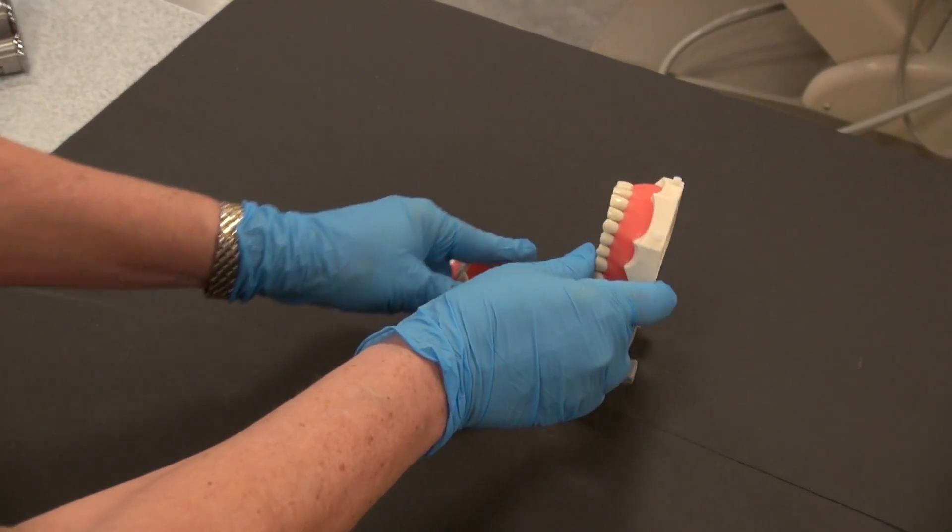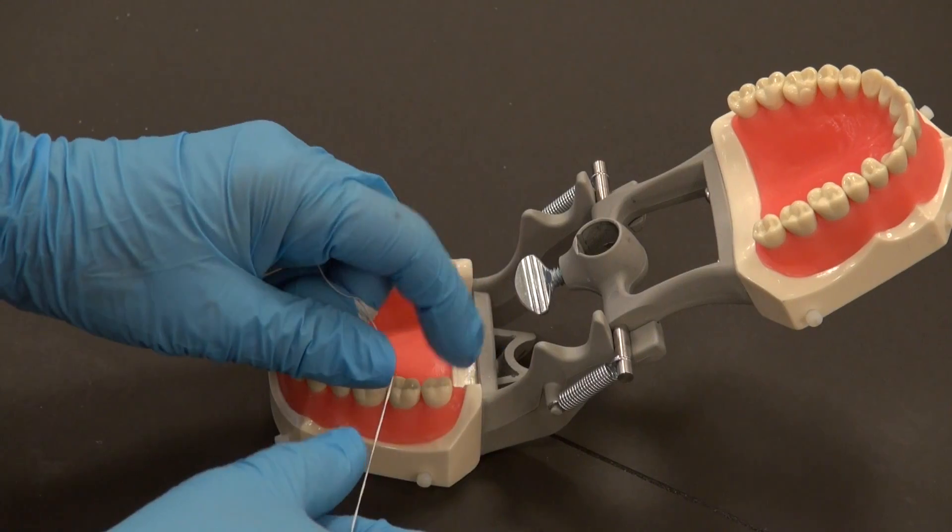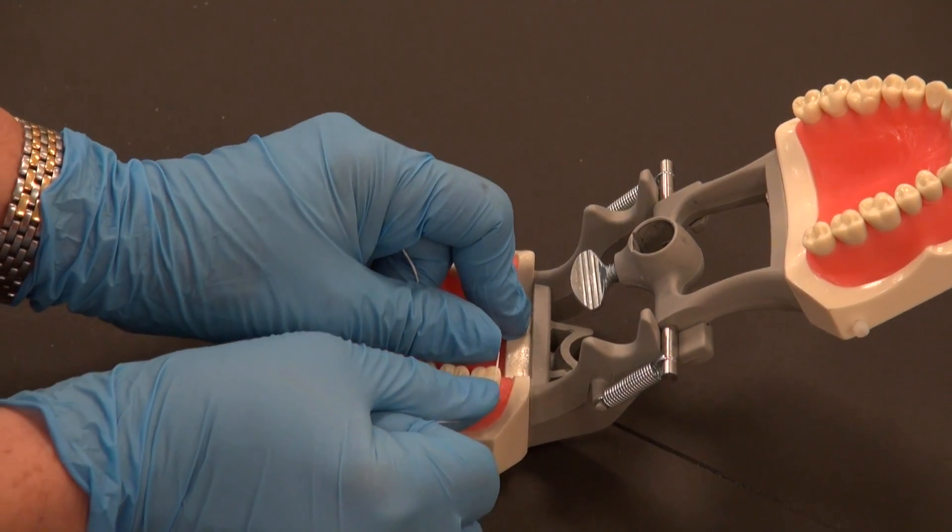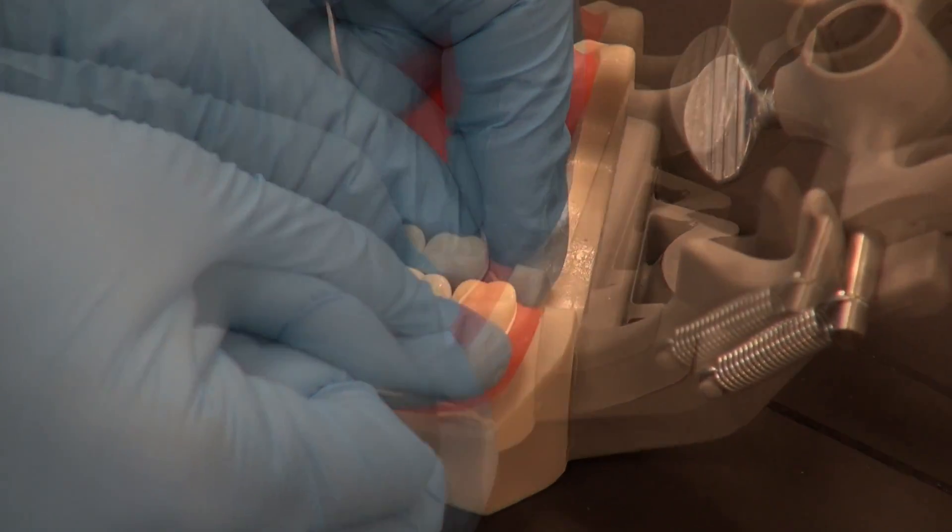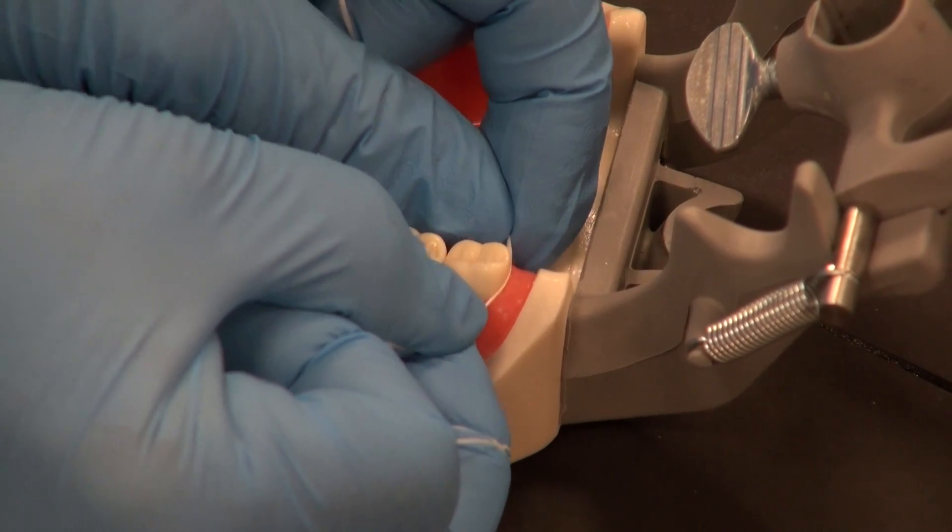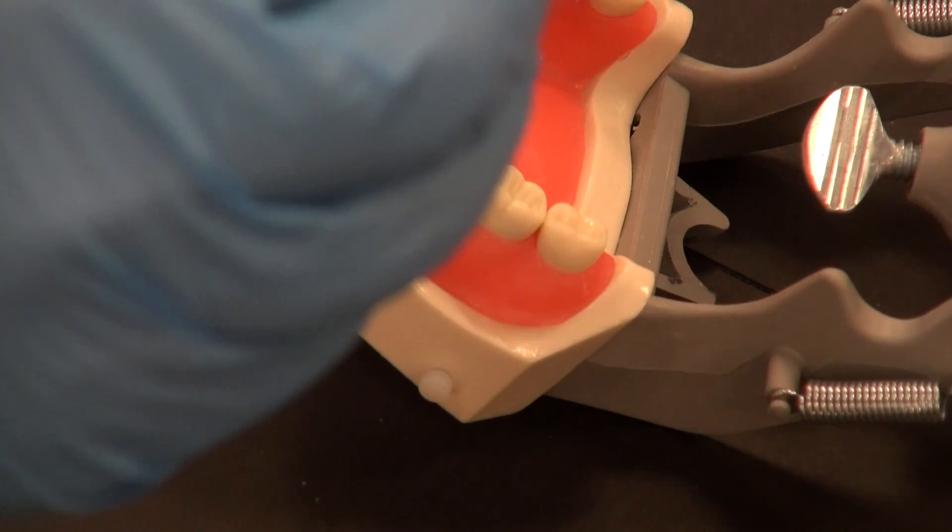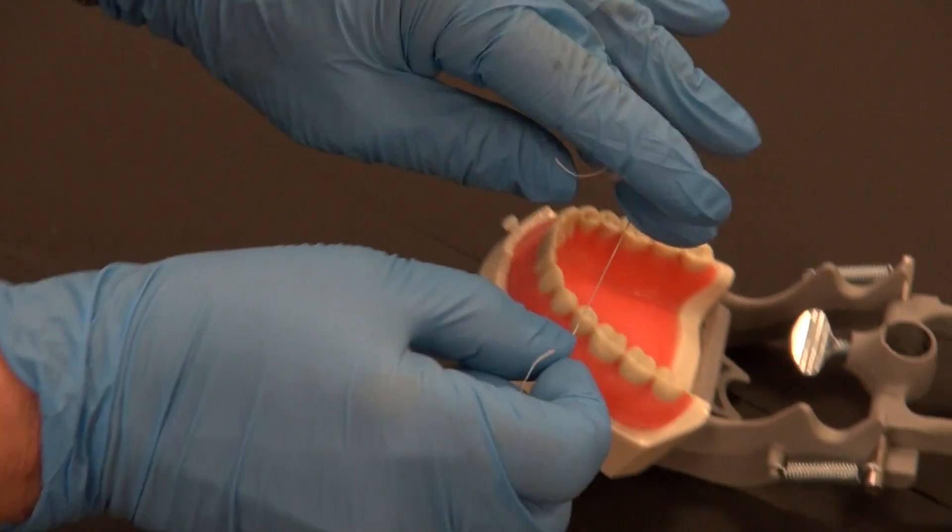When you floss, you always want to start with the distal of the last tooth and you want to also always try to get a system to what you're doing so you're not haphazardly going all over. Place the floss on the distal of the last tooth and then up and down three times. One, two, three. Come out. Take the dirty piece of floss, put it on that hand, take the clean off the other hand.